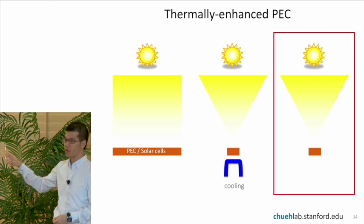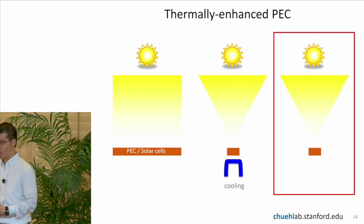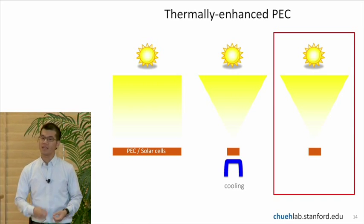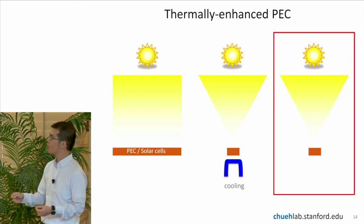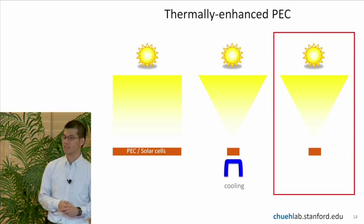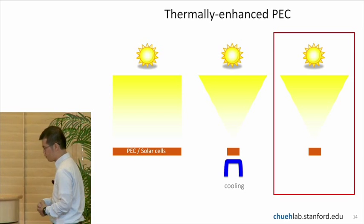What we show here is the third case. With photoelectrochemical cell, it is not necessary to cool it. In fact, we want it to heat up because the extra thermal energy can improve the total current and the voltage output of the cell. And therefore, improve the efficiency of sunlight to fuel processes.